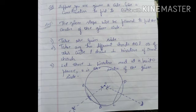The given steps we have to follow: take the given circle, take any two different chords AB and CD of this circle, and draw perpendicular bisectors of these chords. Let these perpendicular bisectors meet at point O. Hence O is the center of the given circle.